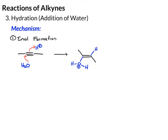Next, we need to get to the enol by removing one of these protons. We can do that by using B as a generic base, or another molecule of water using the lone pair on its oxygen — that's fine also. So we come over and take a proton from that, and we get the enol.